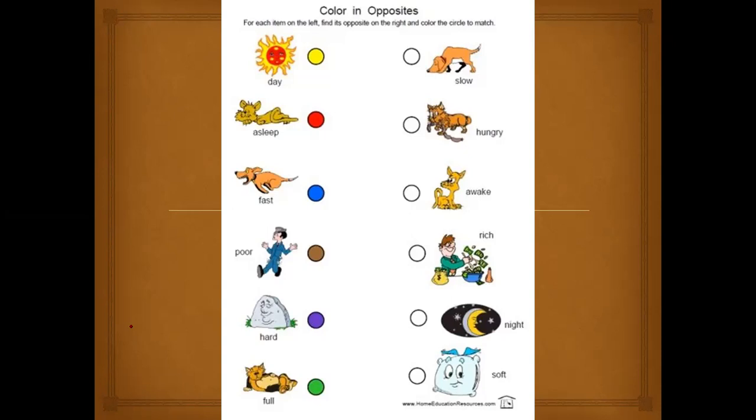So this very first worksheet that you see is in a fun game manner. We will try to solve this, we will do a couple of worksheets, see, revise, solve and then we will move to the main worksheet for the day. So shall we begin? Here let's just read first all the words on the left and all the words on the right. This is always the best practice to do. What does it say? Color in Opposites. The spelling of color will have a U here. This is written in American English, we write it in British English.